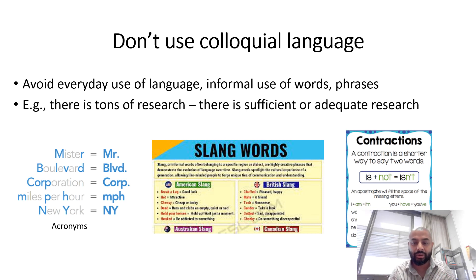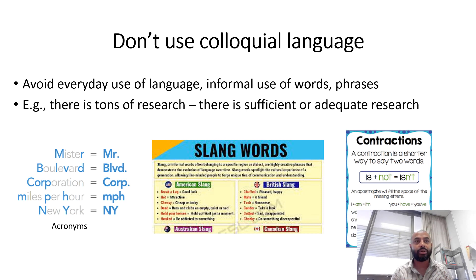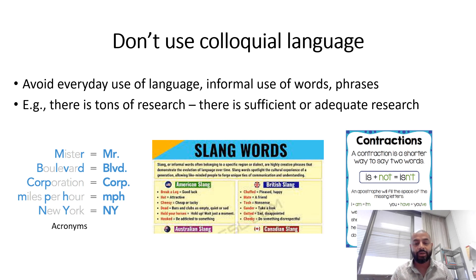The first tip is to avoid using colloquial language — language that we use in our everyday life. For example, instead of writing 'there is tons of research,' we say 'there is sufficient research' or 'adequate research.' Similarly, instead of saying a piece of research was 'awesome' or 'fascinating,' we say 'this research was significant' or 'it made a significant contribution to my area.'